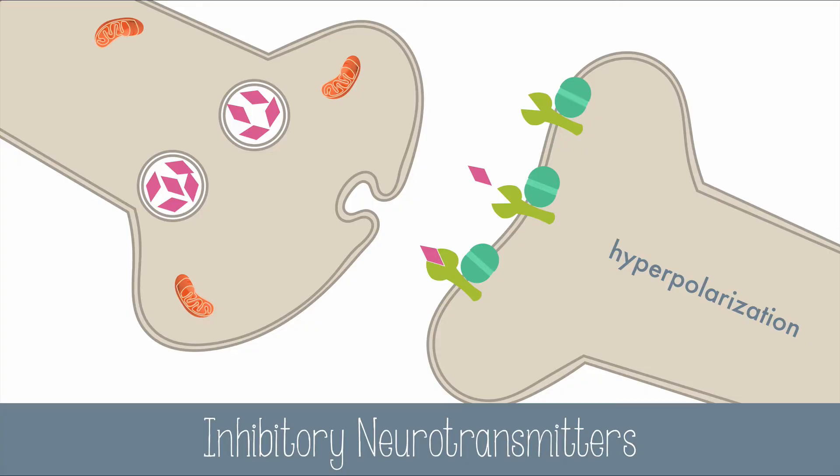This will make the membrane potential more negative, which will make it more difficult to reach threshold potential for sending an action potential. So these inhibitory neurotransmitters are inhibiting the ability for a neuron to fire.